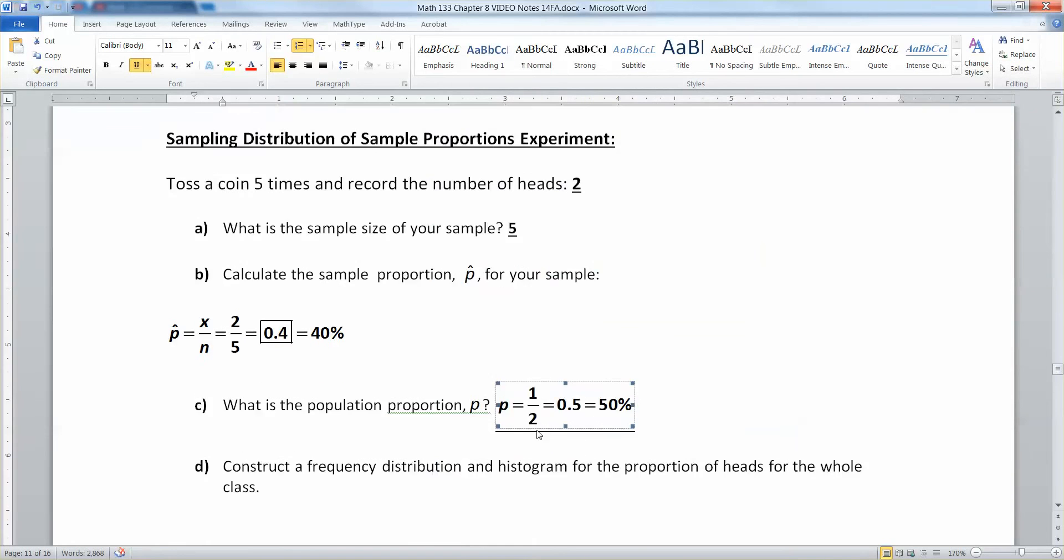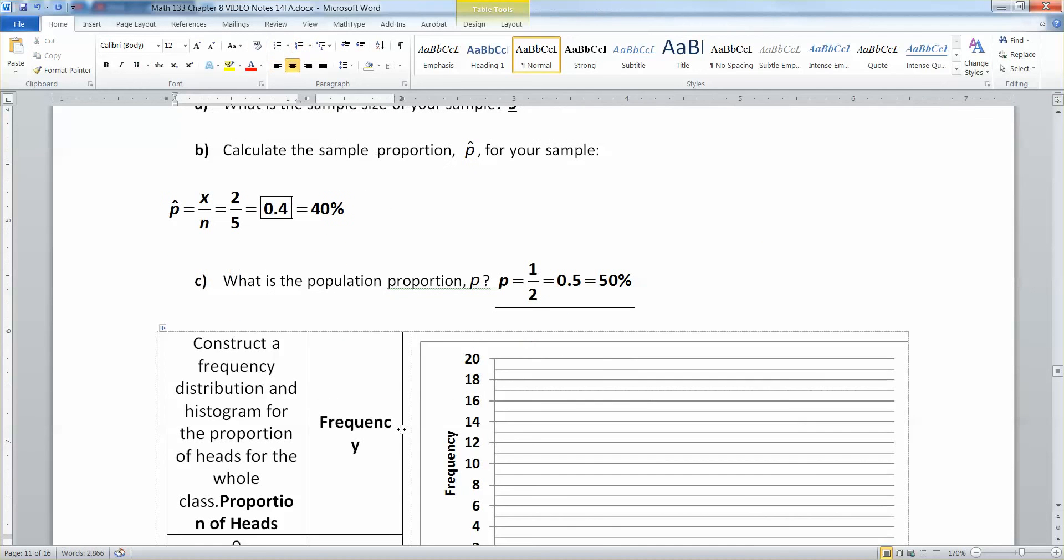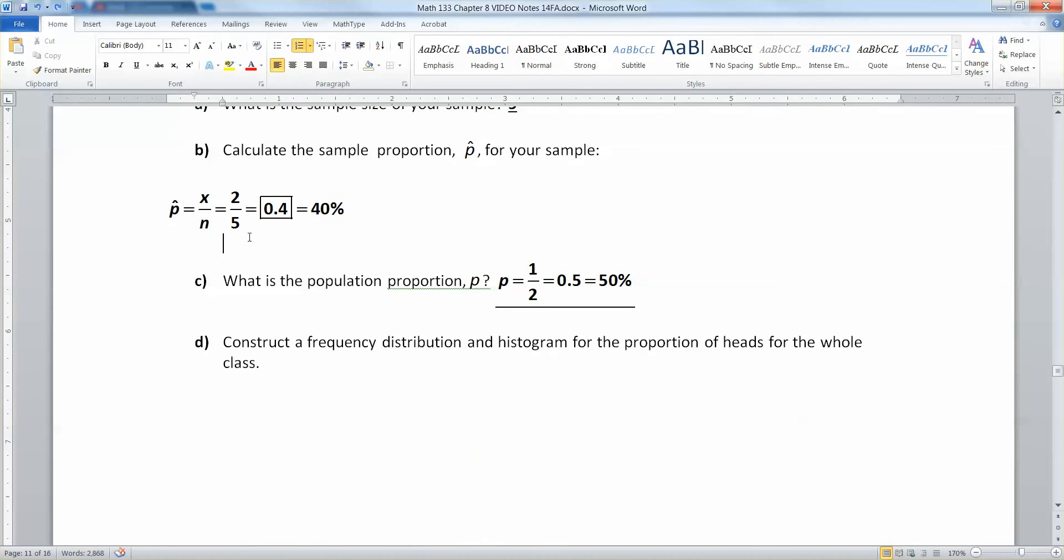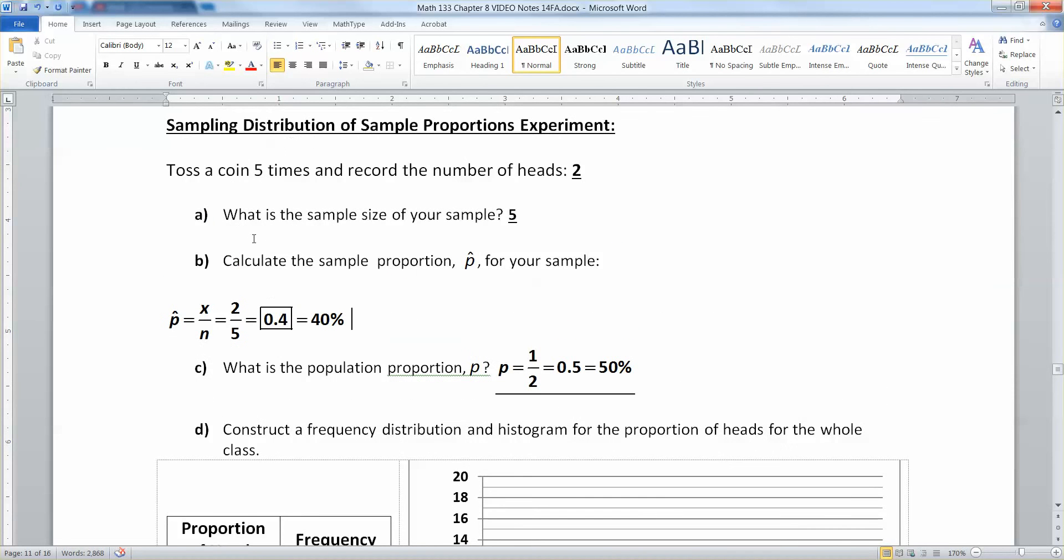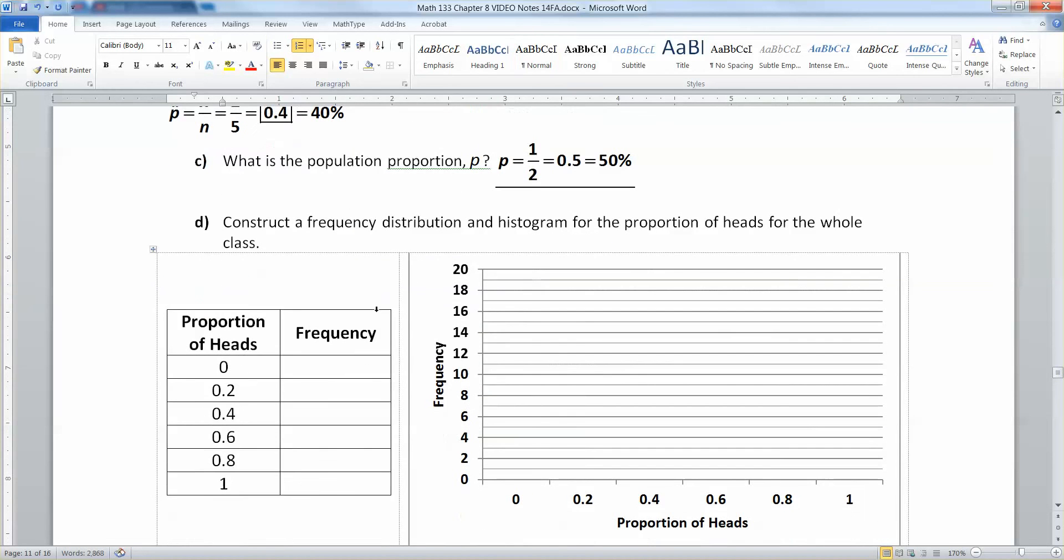So now I'm going to construct a frequency distribution and histogram of the proportion of heads from our class. So I did this with a classroom full of students. You'll just have to trust me. And the numbers they reached were 1, 4, 5, 9, 7, and 2. And we want to make a histogram of that. So you're going to have to draw your bars. The first one goes to 1, the second one goes to 4, and so on. So I'm going to do that with the computer and I'll be right back.